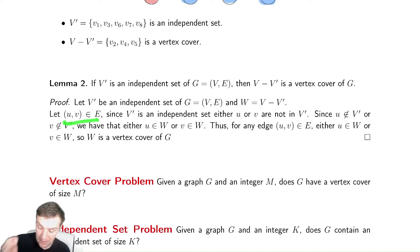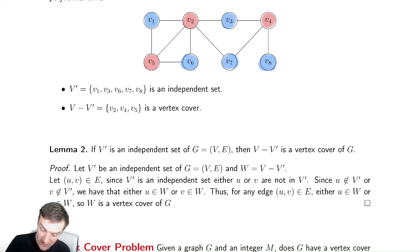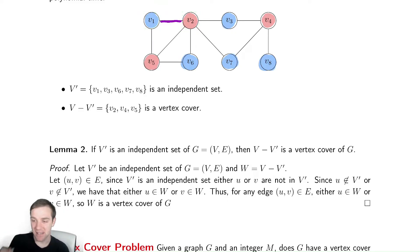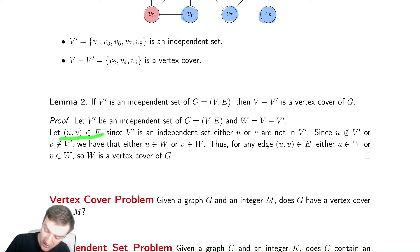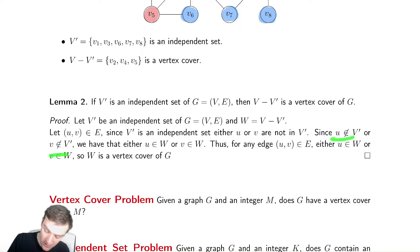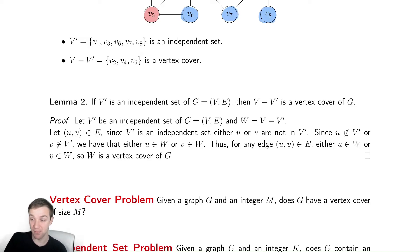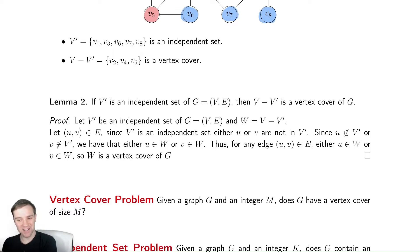If UV is an edge, then by definition, at least one of those vertices can't be in our independent set — because if both were, it wouldn't be an independent set since they'd be connected by an edge. So for every single edge, at least one of the vertices is not in the independent set. Therefore, at least one of U or V is not in V prime, which means U must be in W or V must be in W, because W is the complement. If it's not in V prime, by definition it must be in W. Because one of them is in W, that's all I need to show that it is a vertex cover.